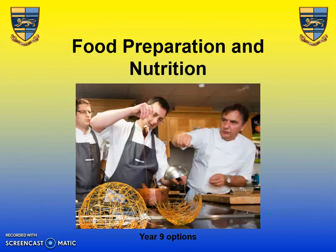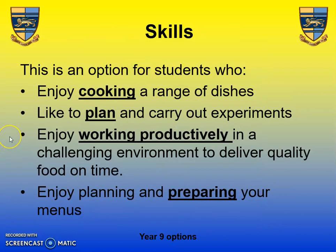The last course is Food Preparation and Nutrition. The skills required here include a range of cooking skills — you'll be practising skills learned in Key Stage 3, learning new skills, and working with more complicated recipes. You'll have to plan and carry out experiments and work productively to finish recipes in the time set. Planning and preparing for the NEA is quite an involved process.